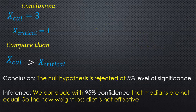We conclude with 95% confidence that the medians are not equal, meaning the new weight loss diet is not effective. This is the conclusion for this example. This is one of the very easiest sums for the sign test for paired data.